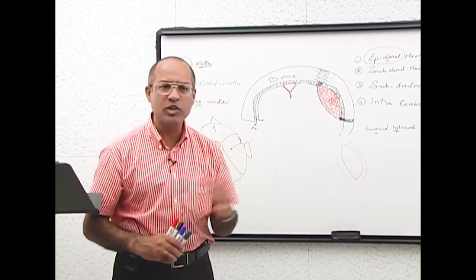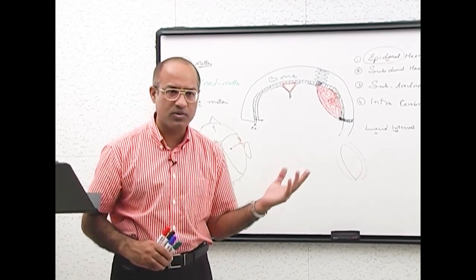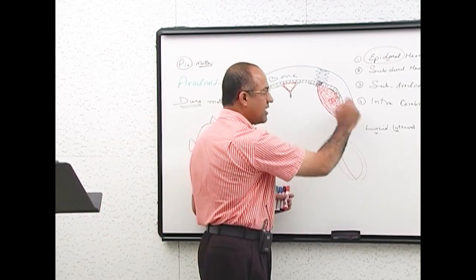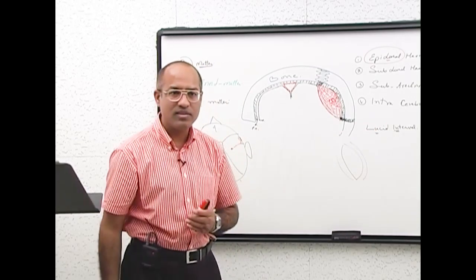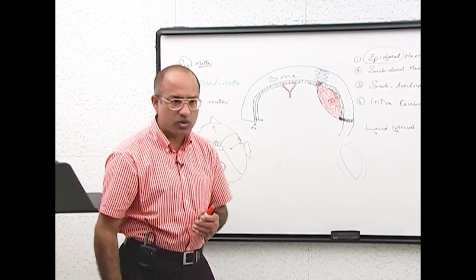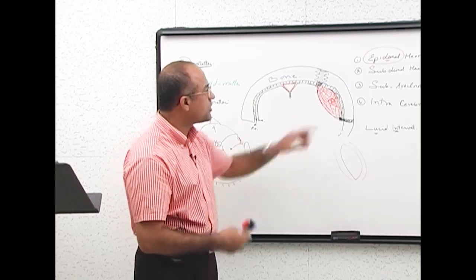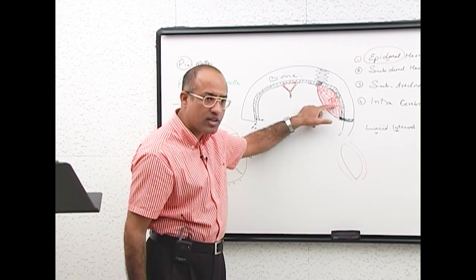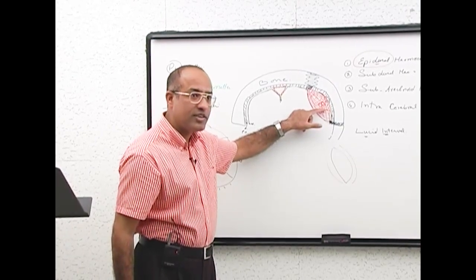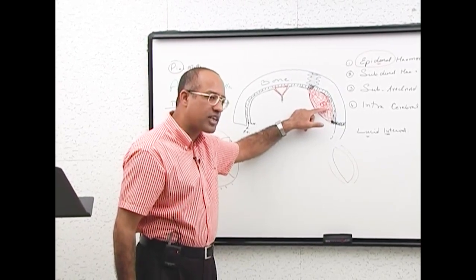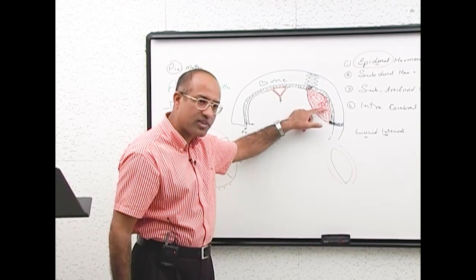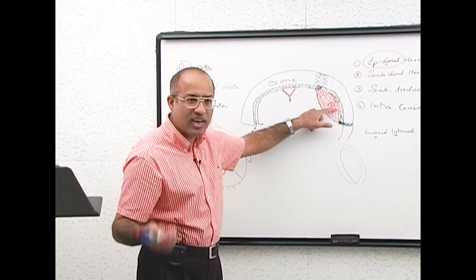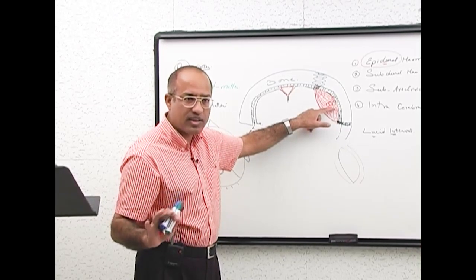Treatment is not that difficult if you diagnose it. Transfer the patient to a neurosurgeon, who will produce a burr hole and evacuate the clot. To summarize: the epidural space in the cranial cavity is a potential space, not an actual space. The vessels that bleed there are the meningeal arteries and veins.